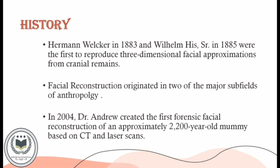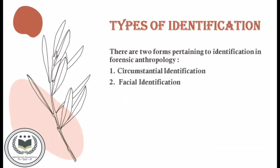Moving to types of identification: there are two forms pertaining to identification in forensic anthropology — circumstantial and positive. Circumstantial identification is established when an individual fits the biological profile of a set of skeletal or largely skeletal remains. This type of identification does not prove or verify identity because any number of individuals may fit the same biological description.